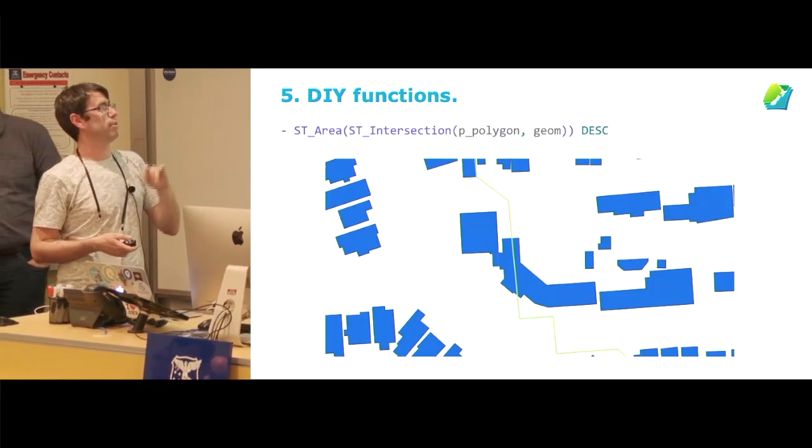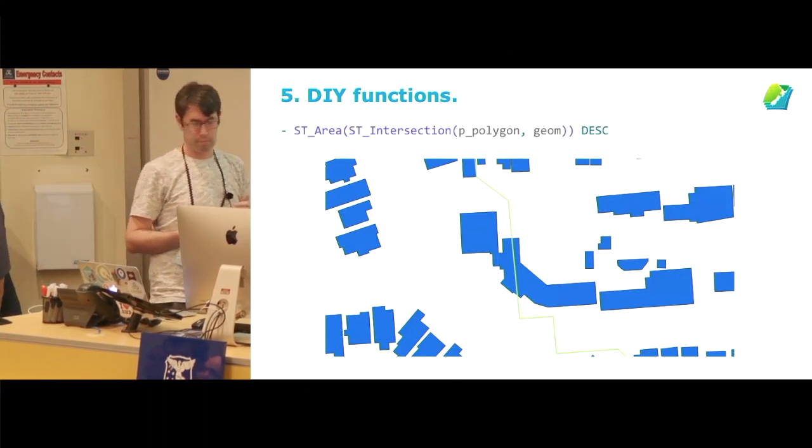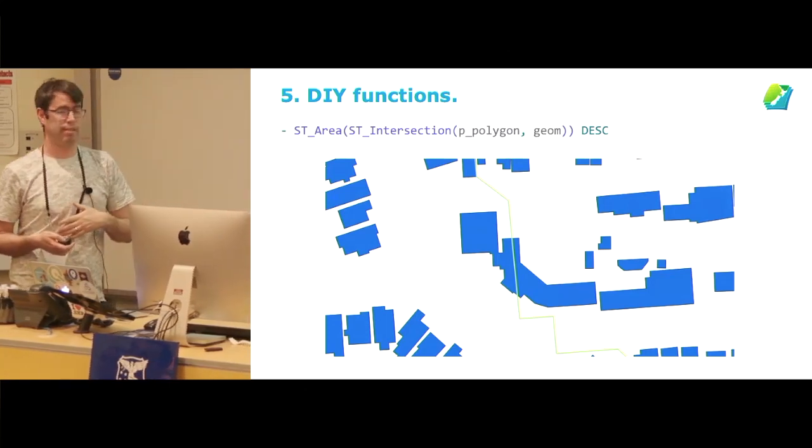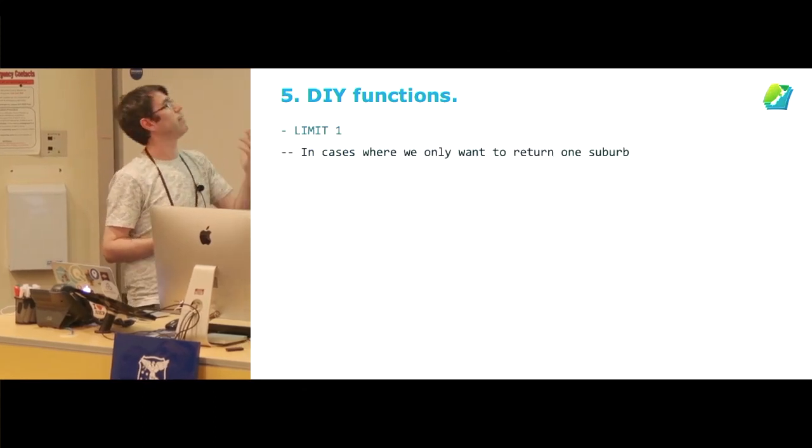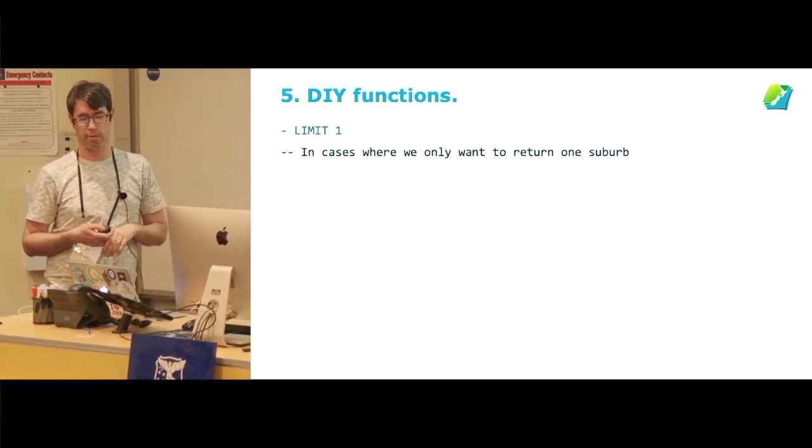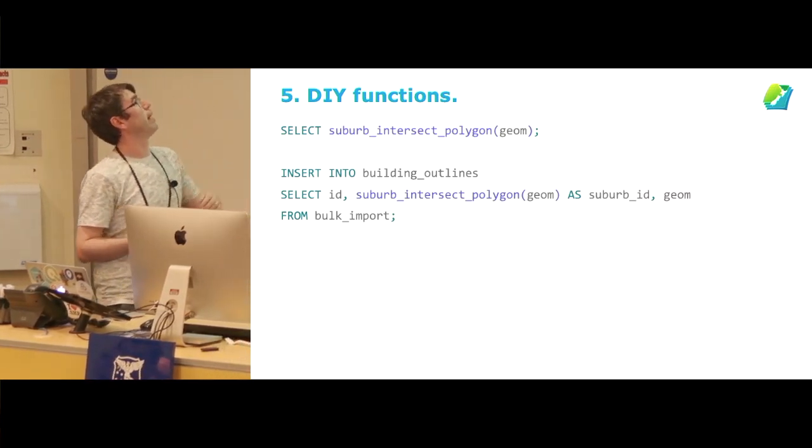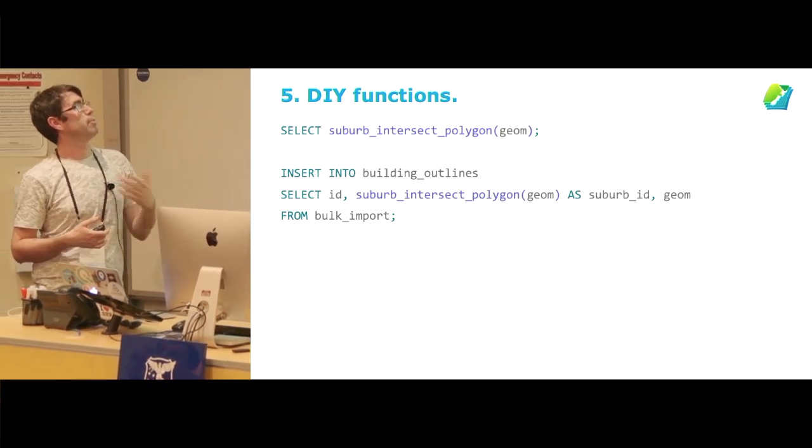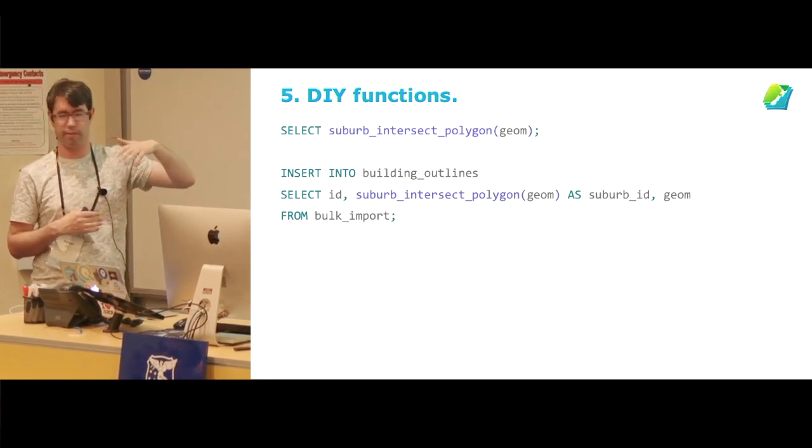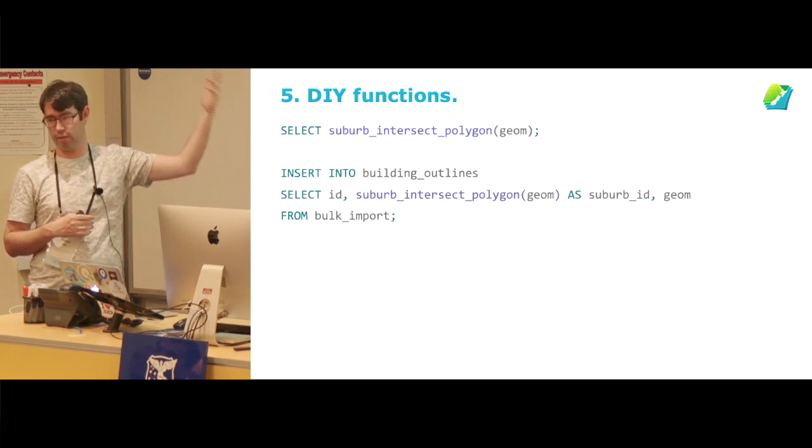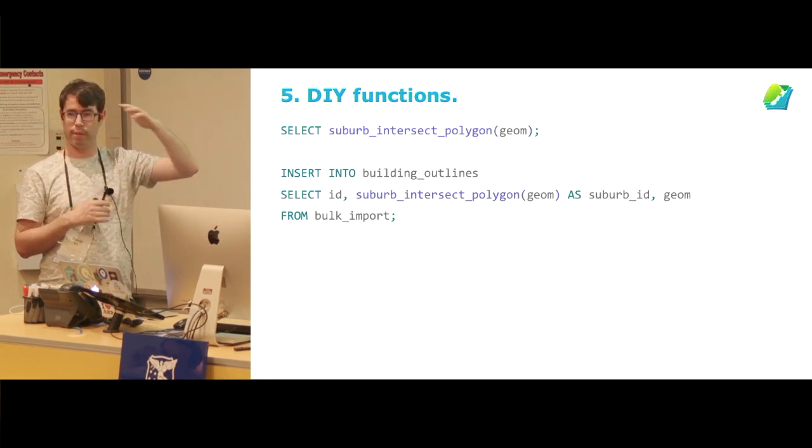And then we can get the distance in ascending order so we can find the suburb that is closest. This function also handles the case where a building crosses over the boundary of two different suburbs and we use the area of the intersection if it's a case where we just want to assign one suburb and forget about the other. The final part of that whole process is limiting it to just the one situation. These stored functions can then be used just as part of other tasks that we need to do. For example, inserting a bunch of building outlines in a bulk import, the more complex code that was on the previous slide is just part of the suburb_intersect_polygon function. But each part's broken down and it's not one large piece of code stored in one place.